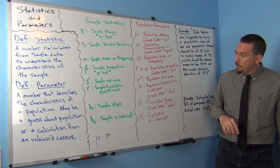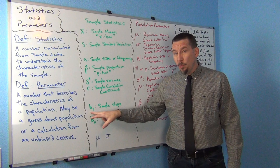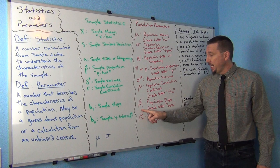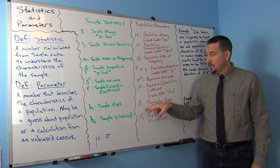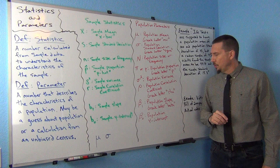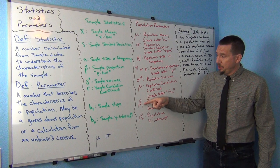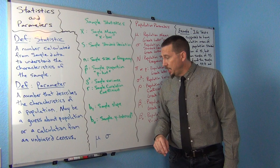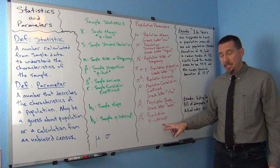If you're trying to find the slope of a line from sample data, that would be b1 — in stats we use b1 for sample slope instead of m from algebra. Beta 1, the Greek letter beta, is the population slope. B0 is usually the sample y-intercept, and beta 0 is the population y-intercept.